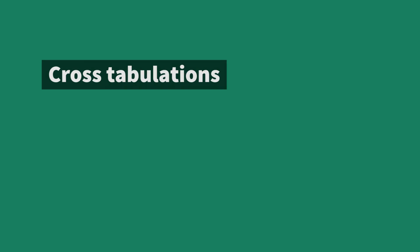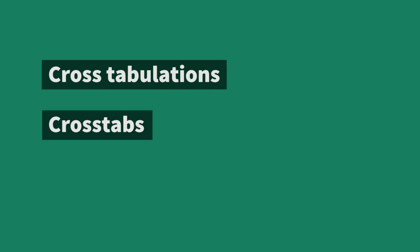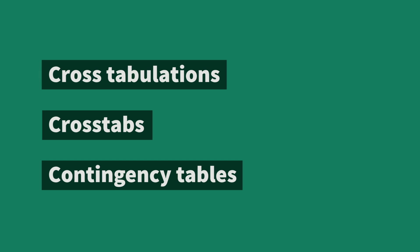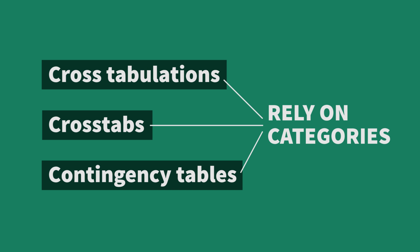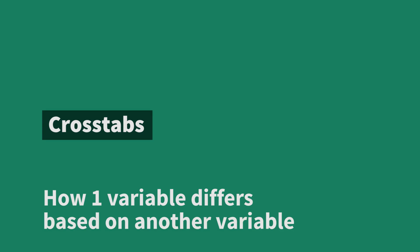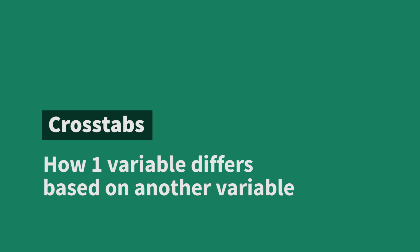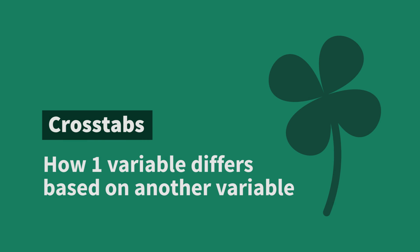Cross tabulations — cross tabs for short — are also known as contingency tables. Cross tabs rely on categorical data and show how one variable differs based on another variable.